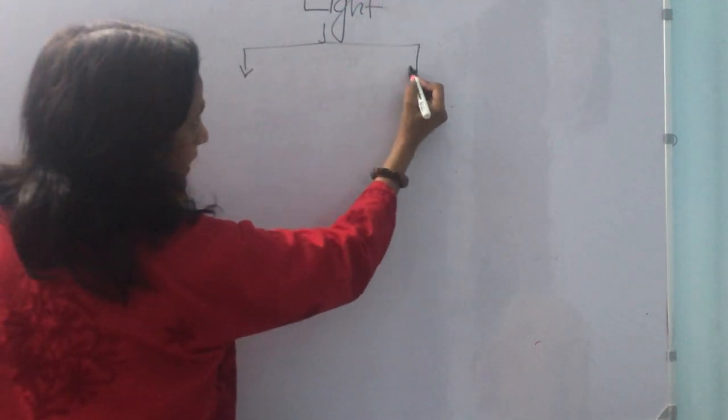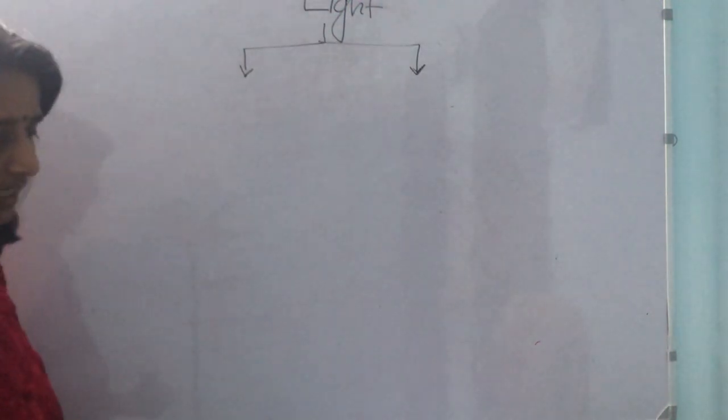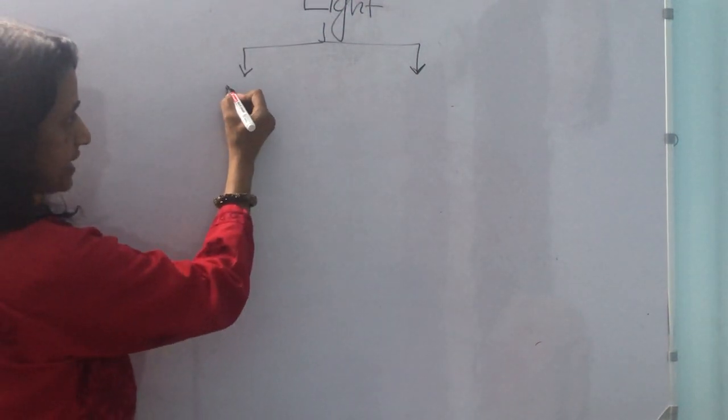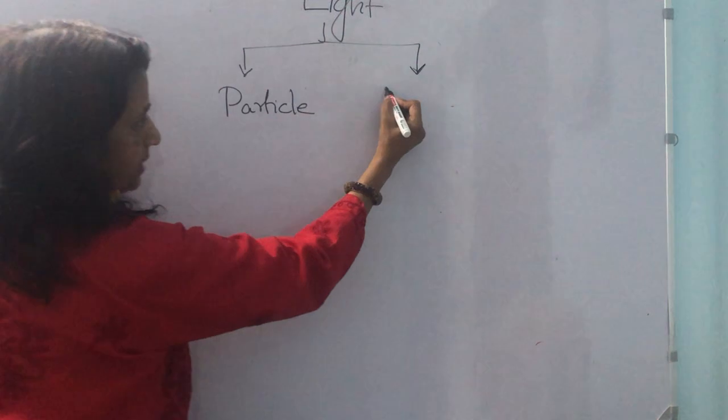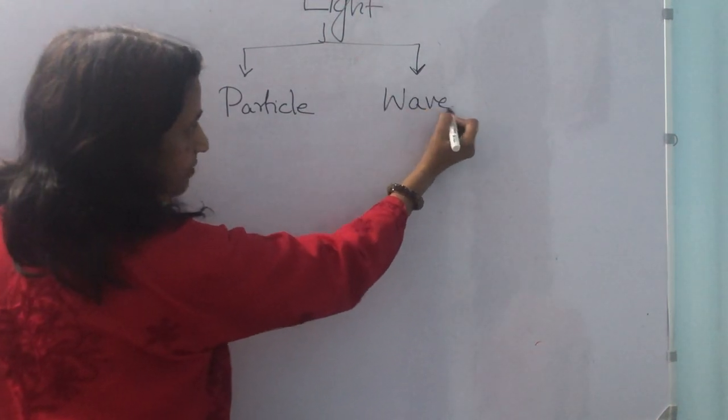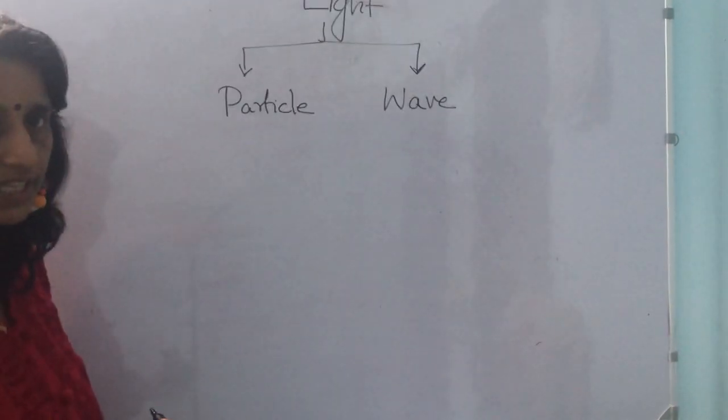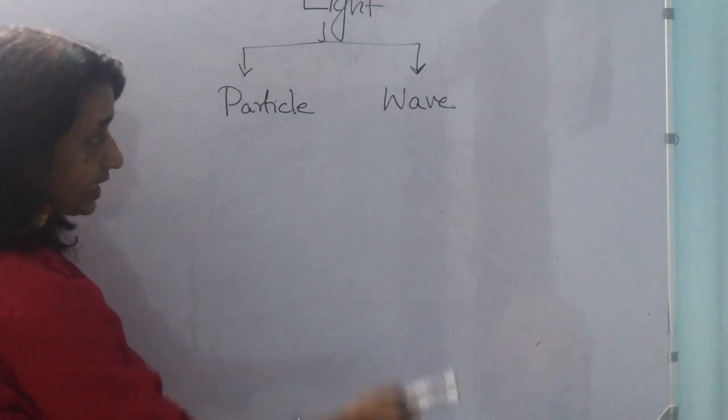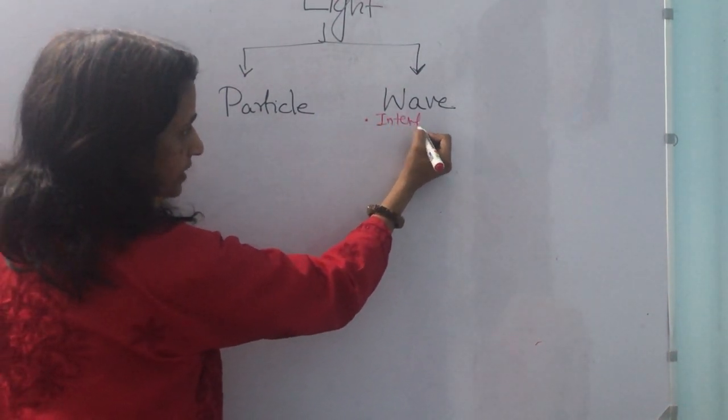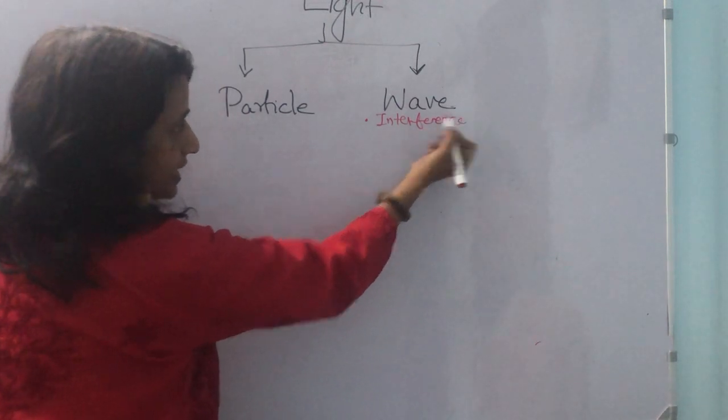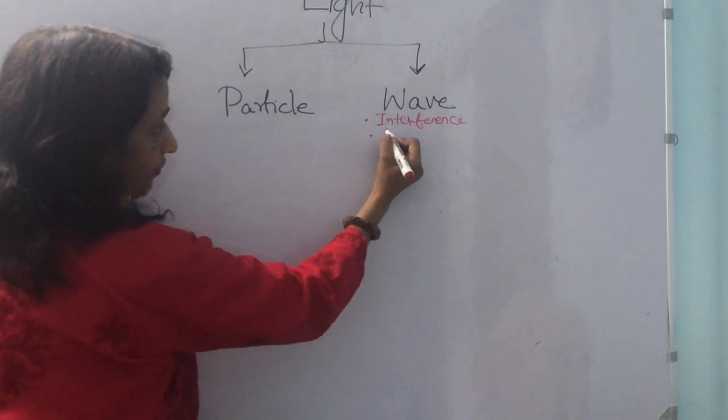At times it behaves as a wave, and at times it behaves as a particle. When it behaves as a wave, like interference, here light is behaving like a wave, diffraction, here light is behaving like a wave.